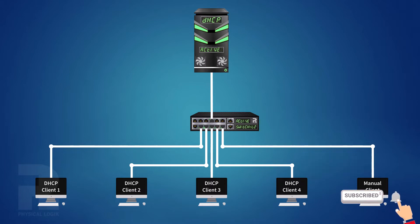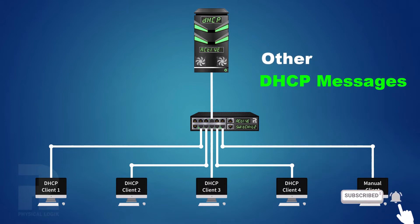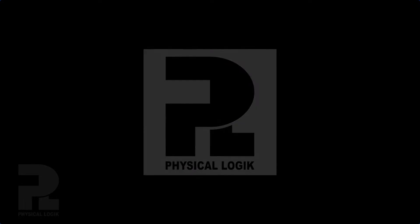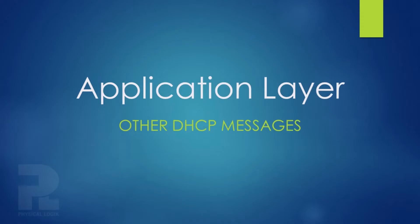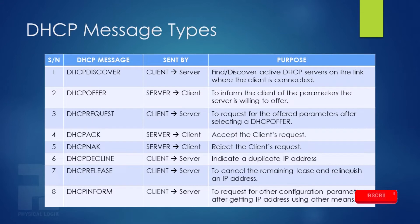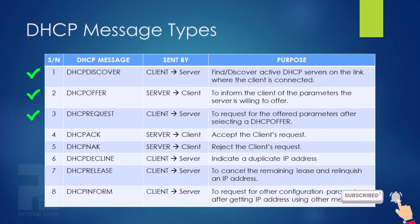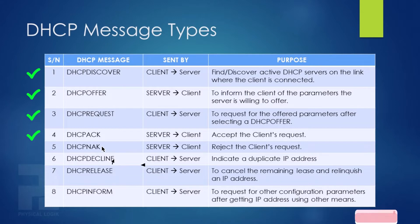Today, we'll talk about other DHCP message types. So far in this series, we've discussed the DHCP Discover, Offer, Request, and Acknowledgement messages. Other DHCP messages we'll talk about today are the DHCP Negative Acknowledgement or DHCP NAK, DHCP Decline, DHCP Release, and DHCP Inform messages.